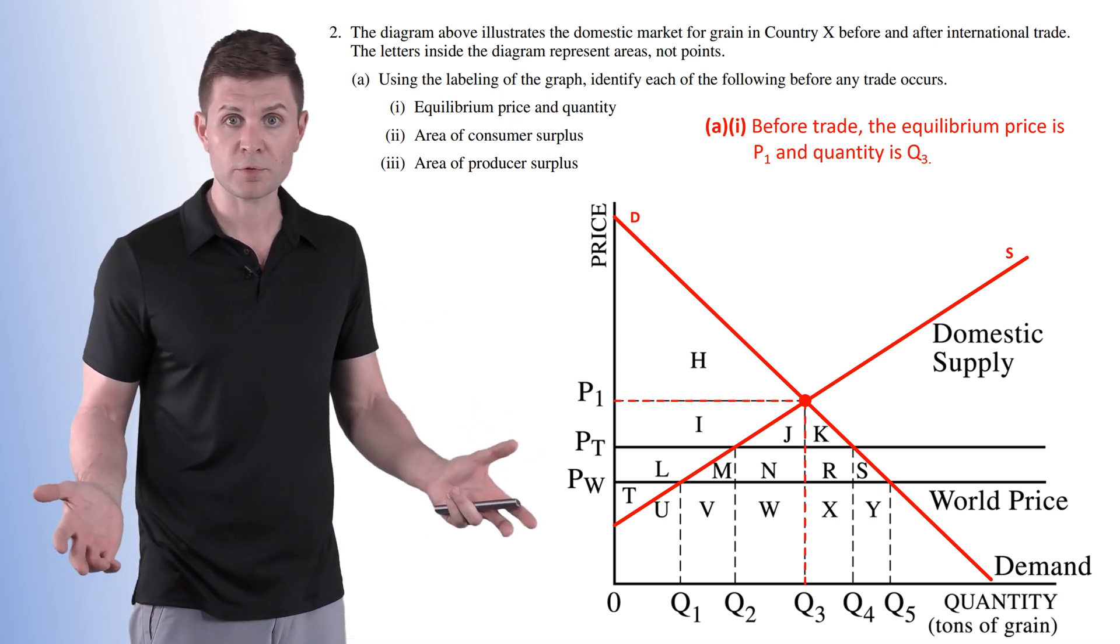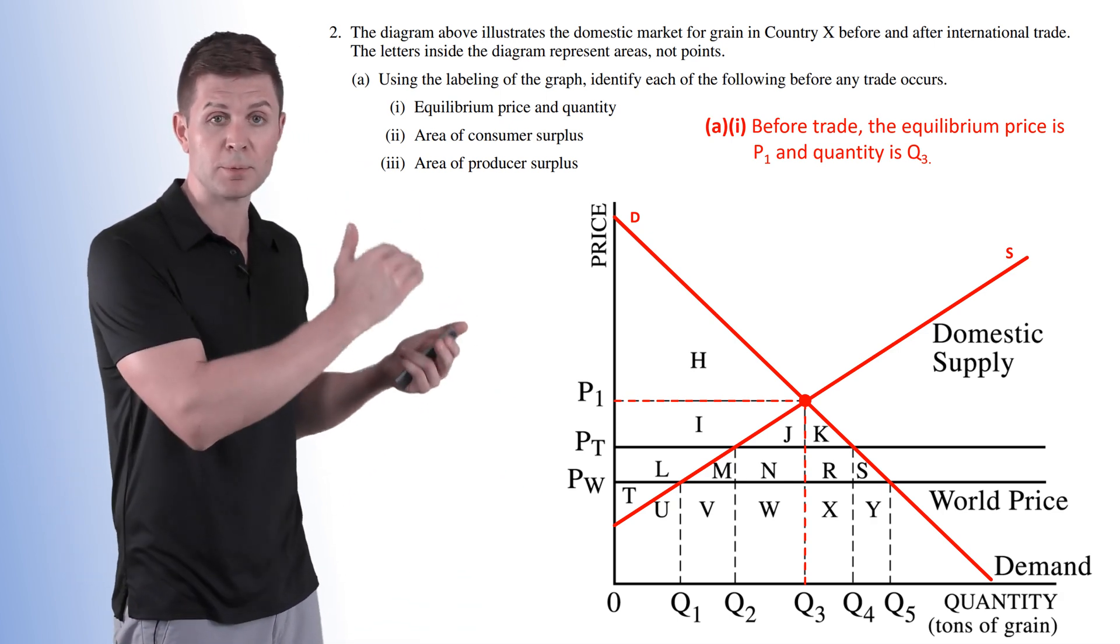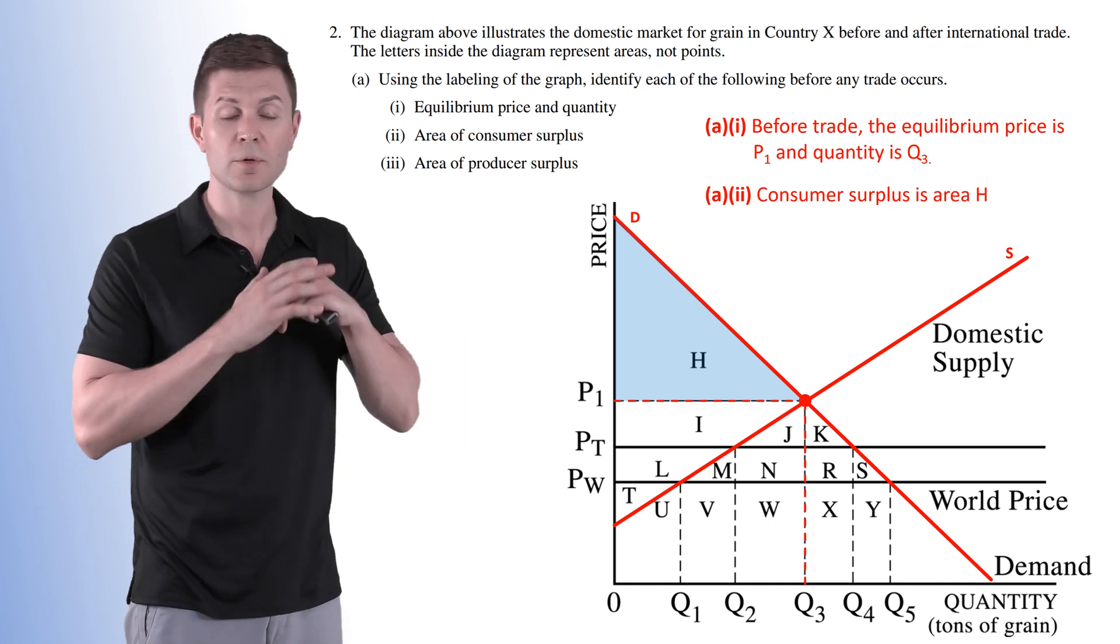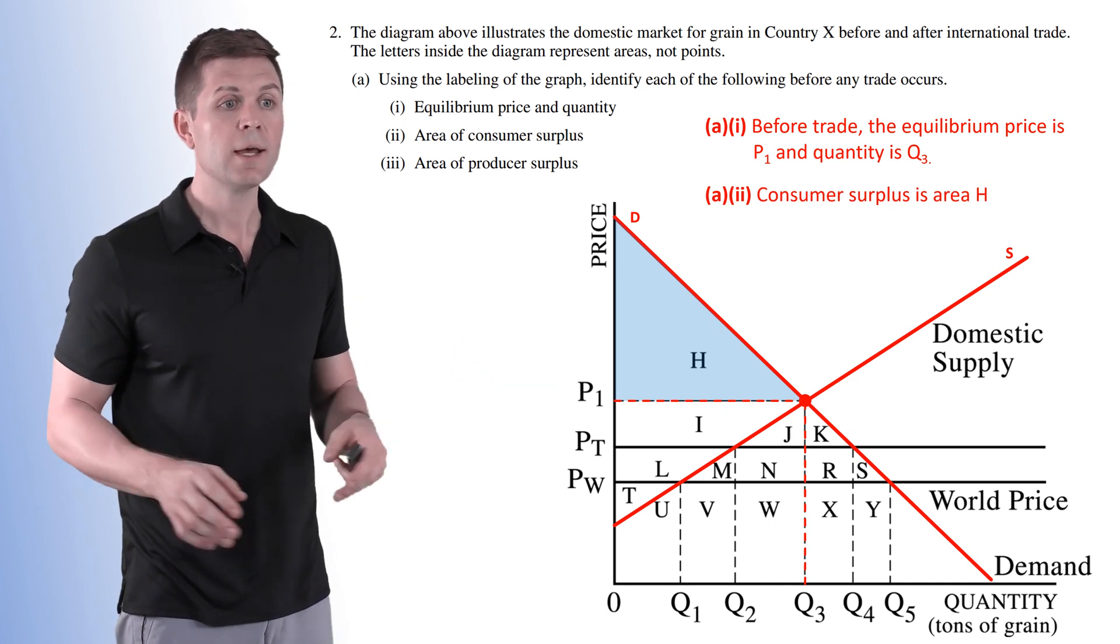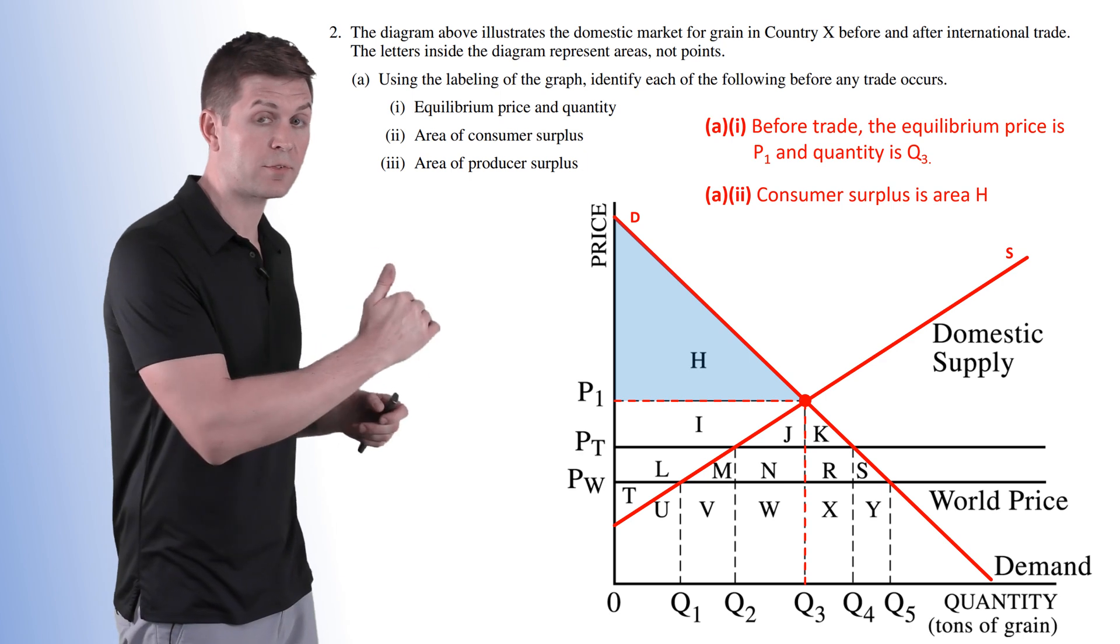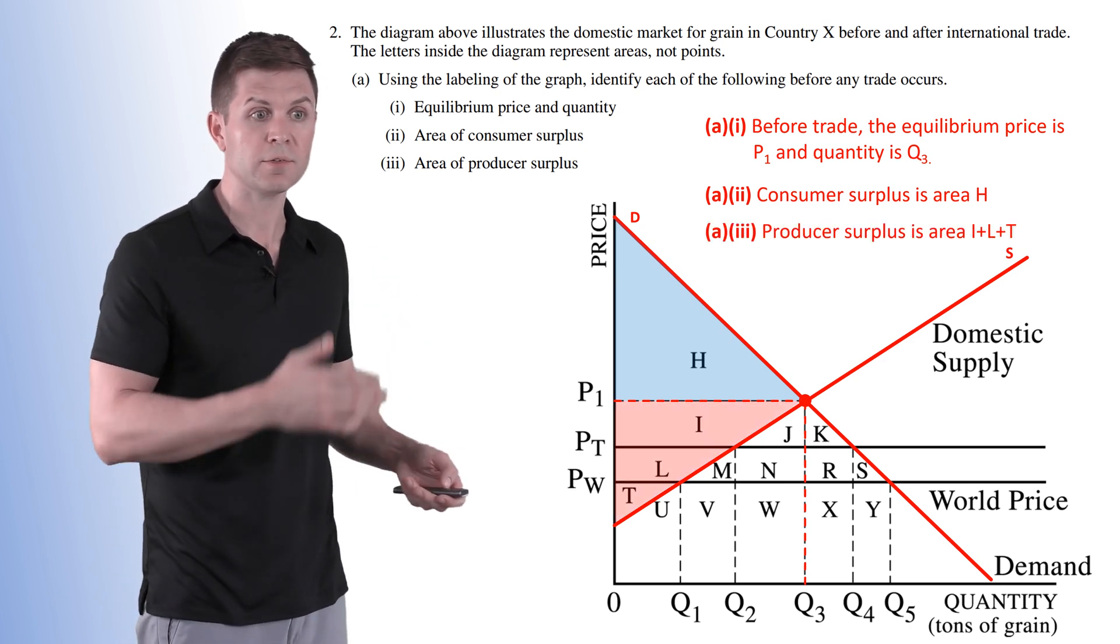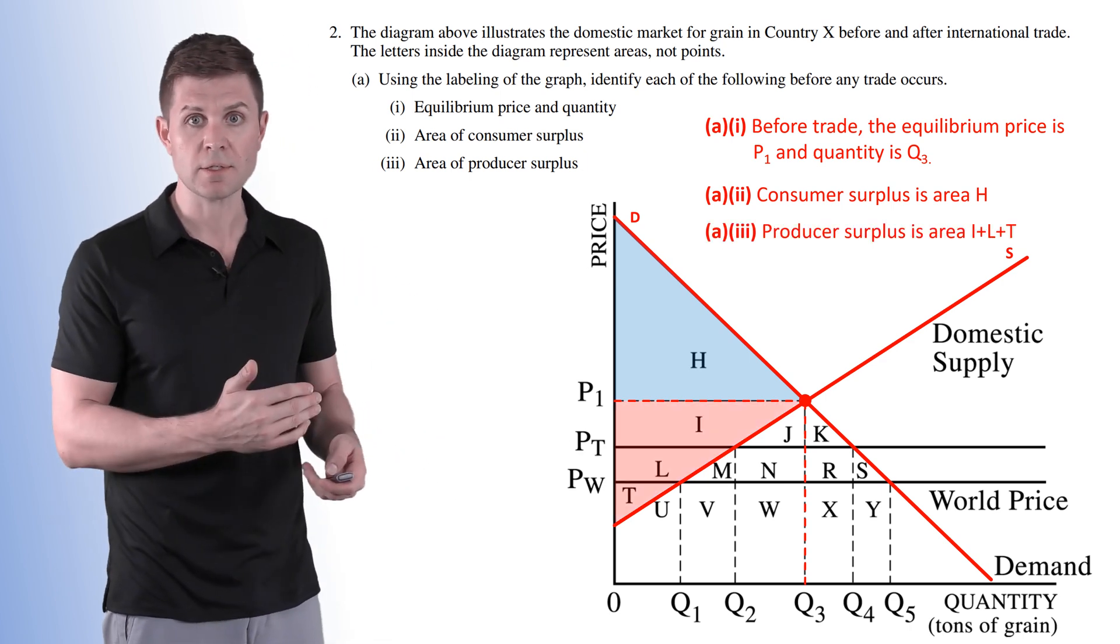P1 is going to be our equilibrium price and Q3 is our equilibrium quantity. Now the area of consumer surplus, everything above the price but below the demand curve, H. Consumer surplus is simply area H. Now everything below the price but above the supply curve is our producer surplus, I, L, and T.